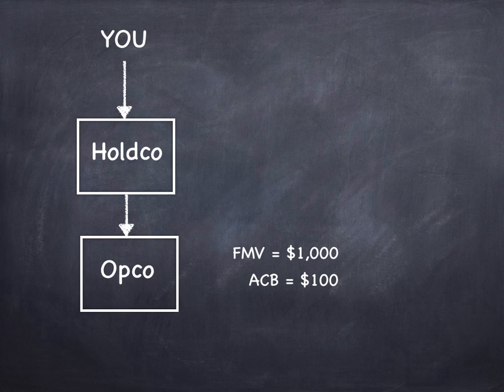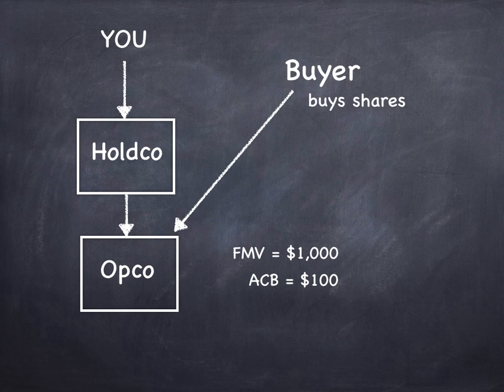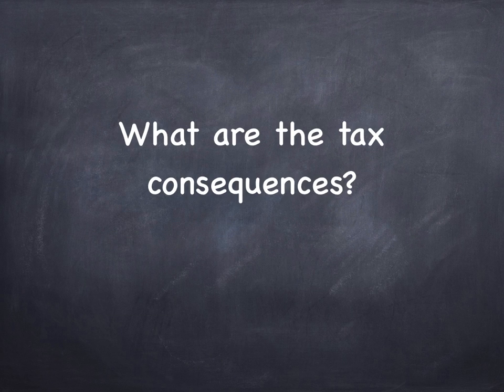You're an owner-manager and you have a HoldCo. Your HoldCo owns shares in an operating company. Let's say that OpCo has a fair market value of $1,000 and the ACB is $100. You want to sell OpCo — along comes a buyer who buys the shares. What are the tax consequences?